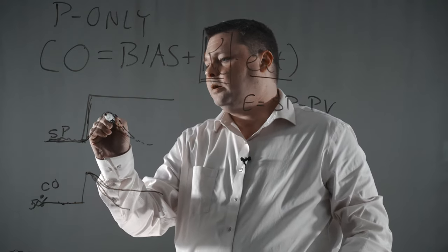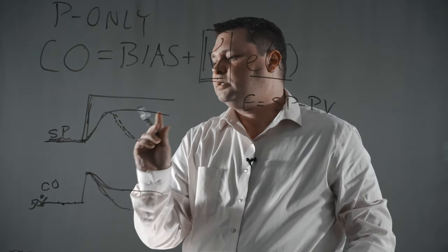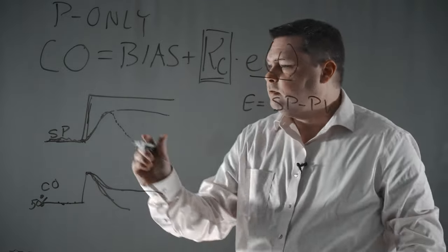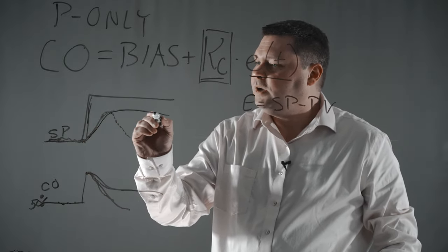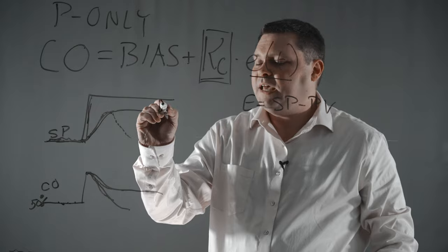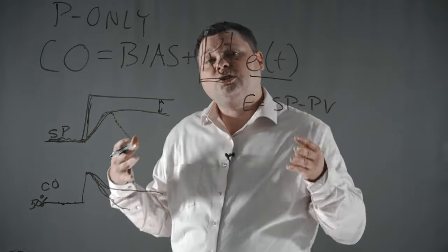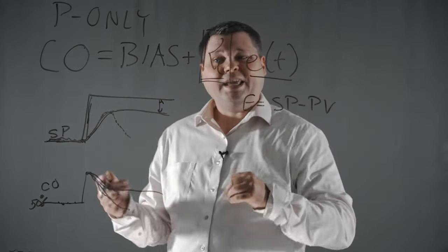And so what you end up with is a controller response that kind of looks something like this. And this up here is probably going to look something like that. So now we have a process variable that's moved up. There's a little bit of offset here, which means we can't actually get to the setpoint. Why can't we get to the setpoint?